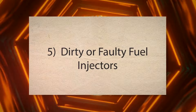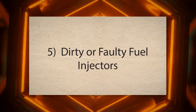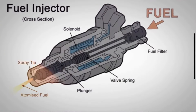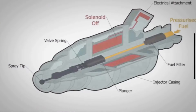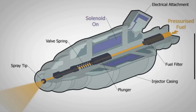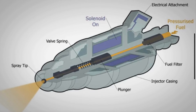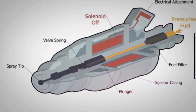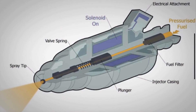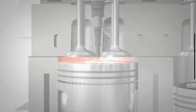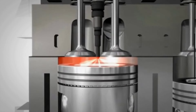5. Dirty or Faulty Fuel Injectors. Fuel injectors deliver fuel to the engine in a fine mist. If they are clogged or faulty, they may not supply a consistent fuel flow, which may lead to an uneven air-fuel mixture and unstable idle.